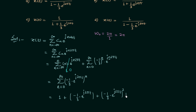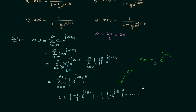If you observe this series, you will find it is a geometric progression (GP), because there is a common ratio r. The common ratio r equals the second term divided by the first term, which is −(1/3)e^(j2πt). You can also verify by dividing the third term by the second term. The ratio remains constant throughout the series, confirming it is a GP.